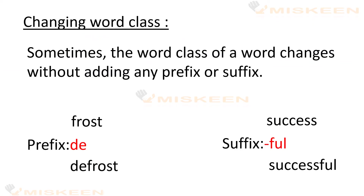Changing word class — har alfaaz ka ek class hota hai: noun, verb, adjective wagera. Inhein kaise change kar sakte hain — noun se verb, verb se noun? Aksar yeh hota hai prefix aur suffix ke istemal se. Jaise word 'frost' — jami hui barf — agar isme prefix 'de' lagaate hain: 'defrost' ka matlab hai jami hui barf ko pighalana. 'Frost' noun tha aur 'defrost' verb hai.